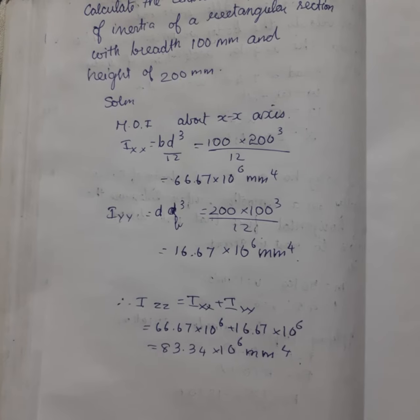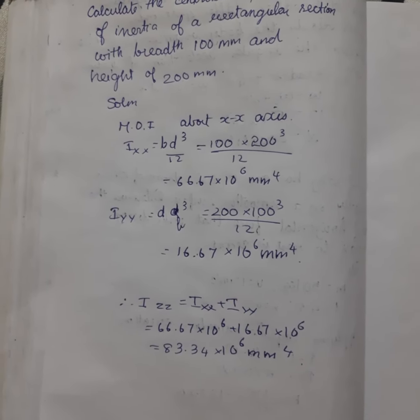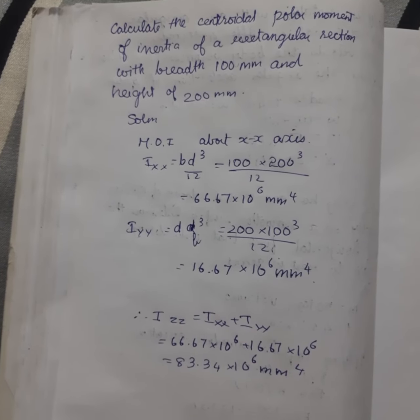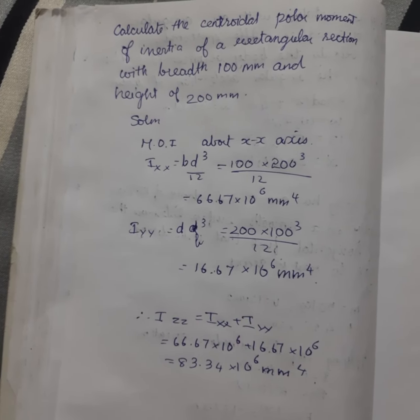I_zz equals I_xx plus I_yy, which equals 66.67 times 10⁶ plus 16.67 times 10⁶, which equals 83.34 times 10⁶ mm⁴. Thank you friends.